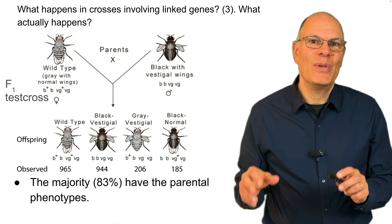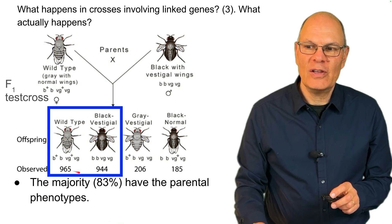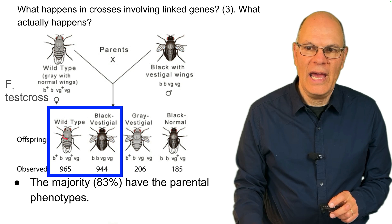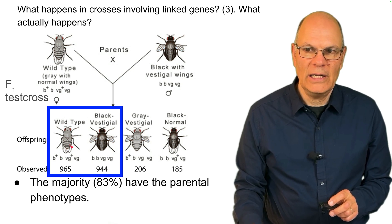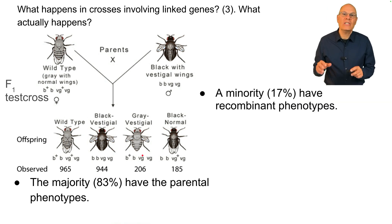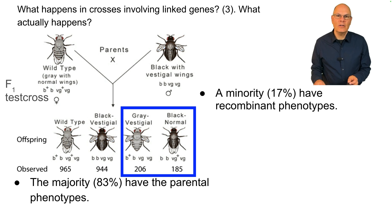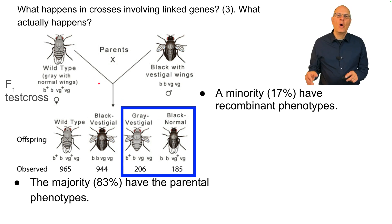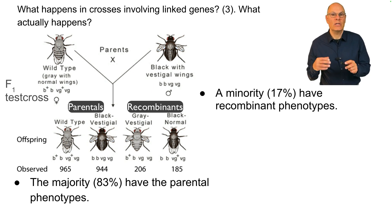What actually happens is that the majority of offspring have parental phenotypes. The mother's phenotype was gray body with normal wings, and many offspring have that phenotype. The father's phenotype was black body with vestigial wings, and many offspring have that too. But a significant number of offspring have recombinant phenotypes — combining one phenotype from the mother with one from the father. For example, gray body like the mother but vestigial wings like the father, or black body like the father but normal wings like the mother. Most offspring are parental, but a significant minority are recombinant because linkage is not perfect.